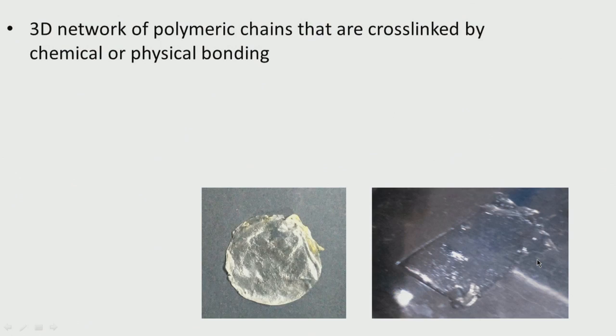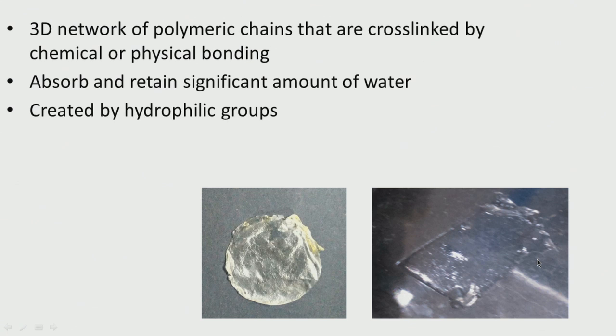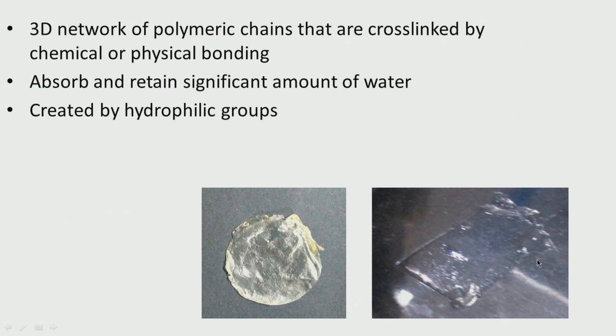It is a 3D network of polymeric chains that are cross-linked by chemical or physical bonding. There are bonds of chemical nature, or physical bonds could be like non-bonded interactions and so on. They absorb and retain large amounts of water. There are a lot of hydrophilic groups, and there are even groups which are negatively charged, so they can take up cations.